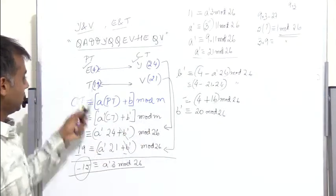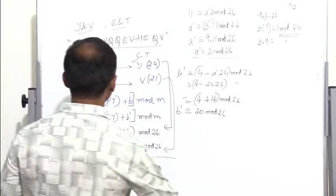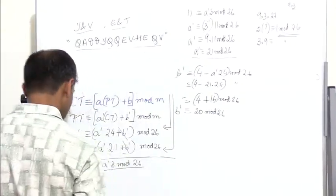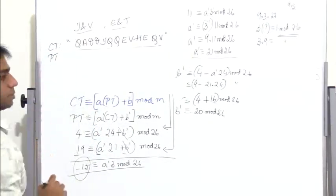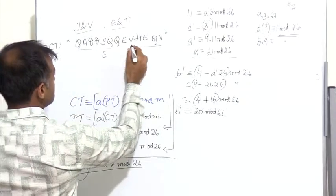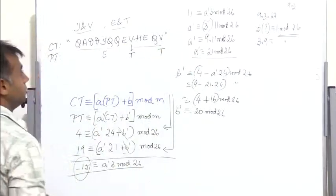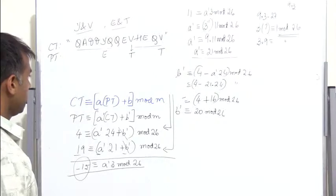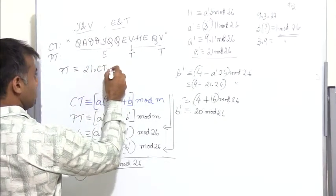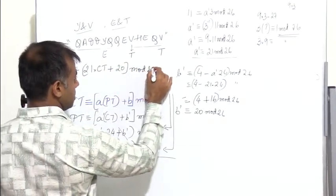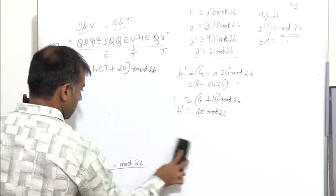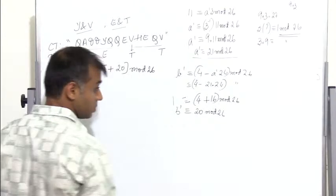We have calculated a' = 21 and b' = 20. Now we substitute each ciphertext value into the decryption equation: plaintext ≡ 21 × ciphertext + 20 operating in mod 26. We already know y maps to e and v maps to t, so we need to find the plaintext for q, a, o, e, and h.